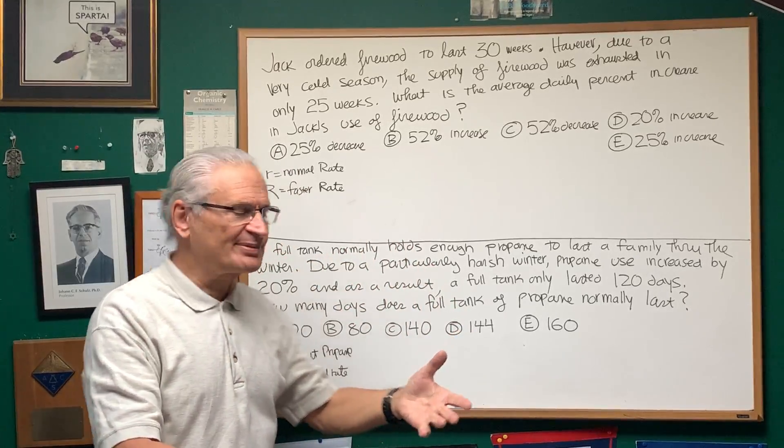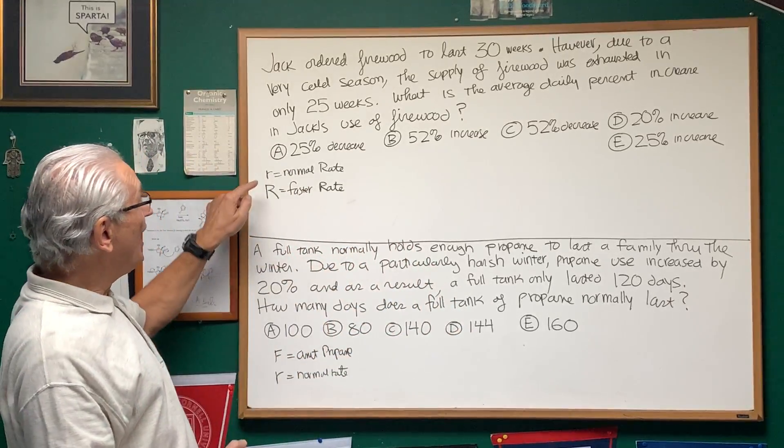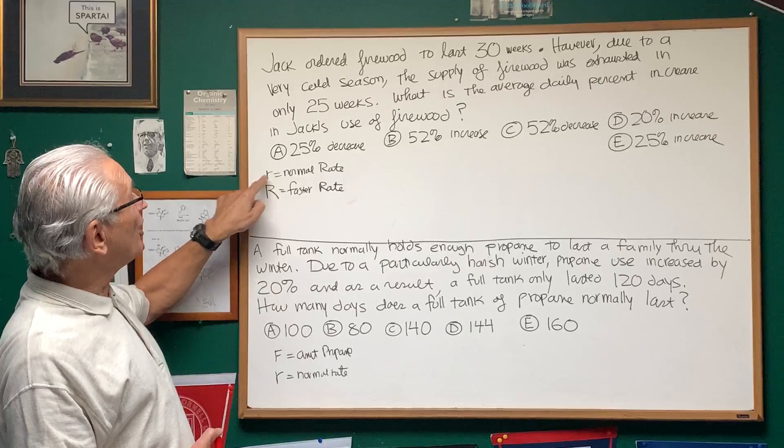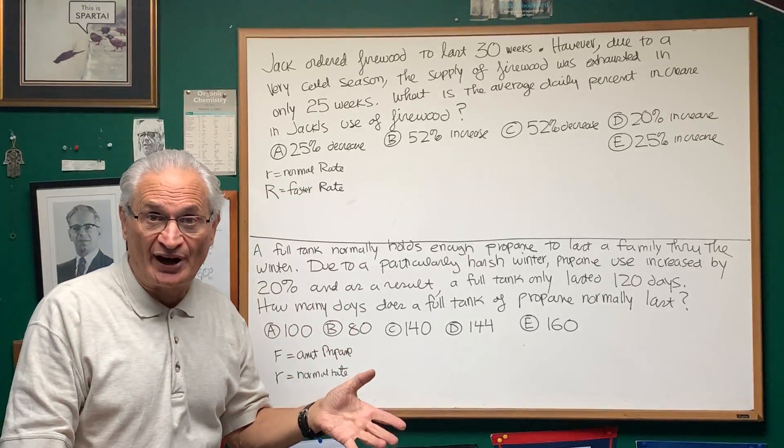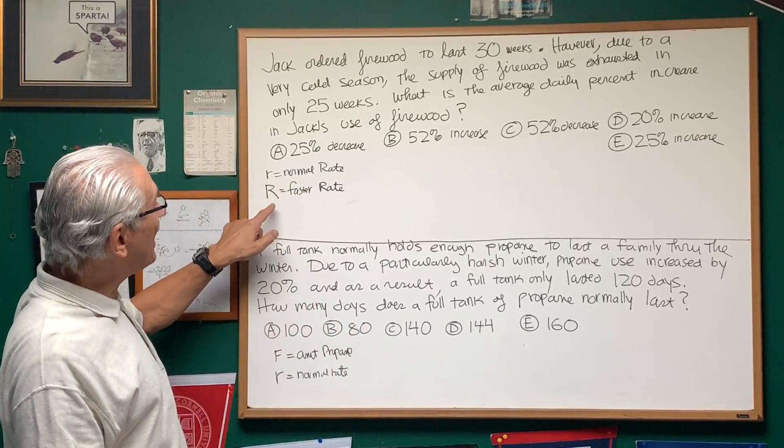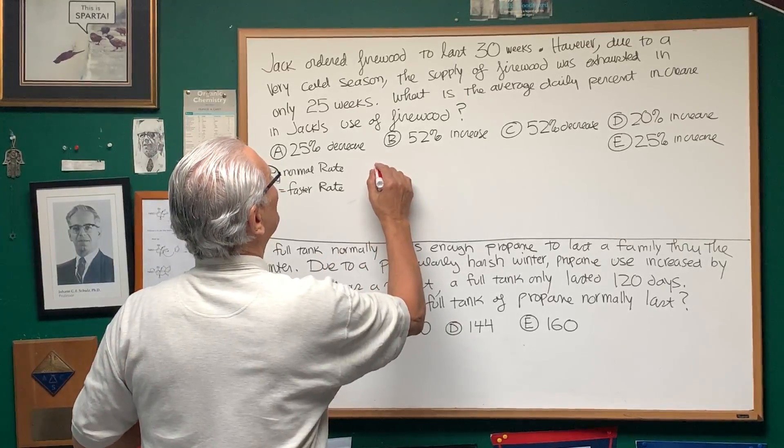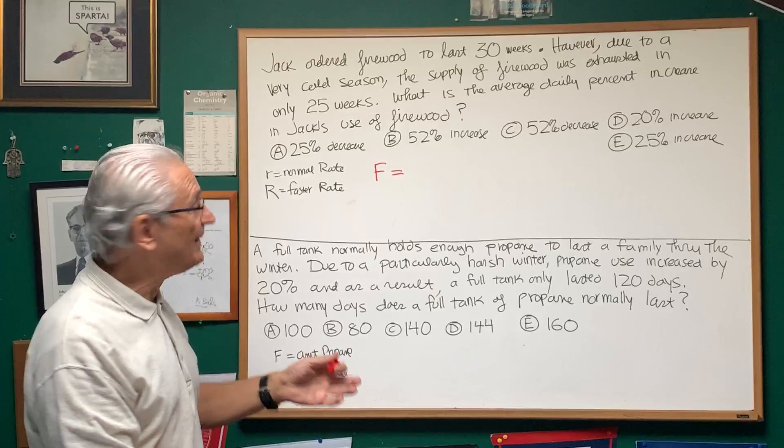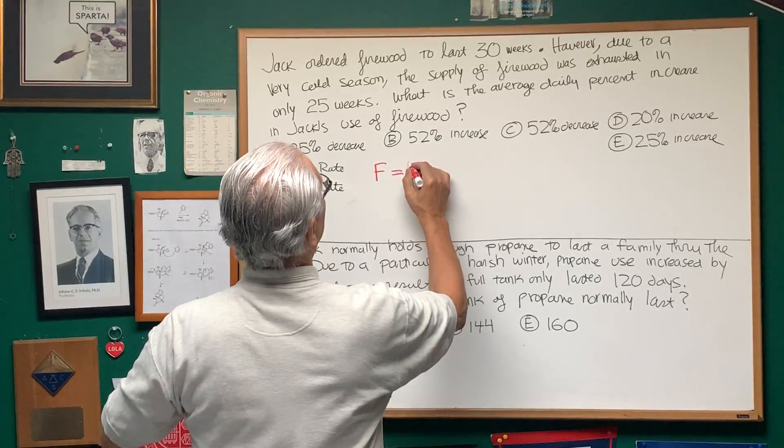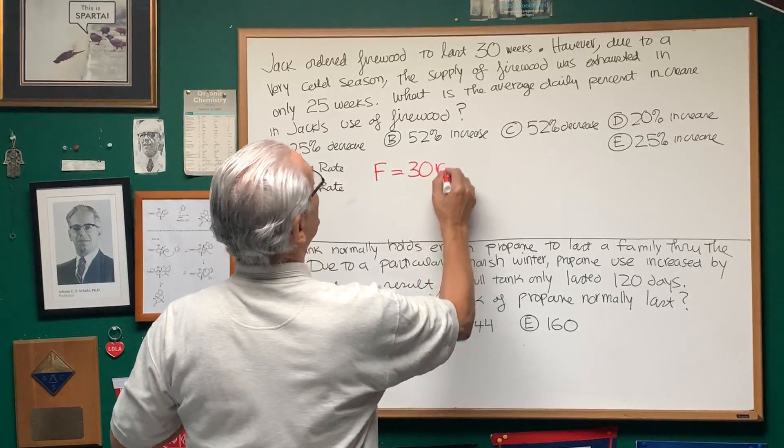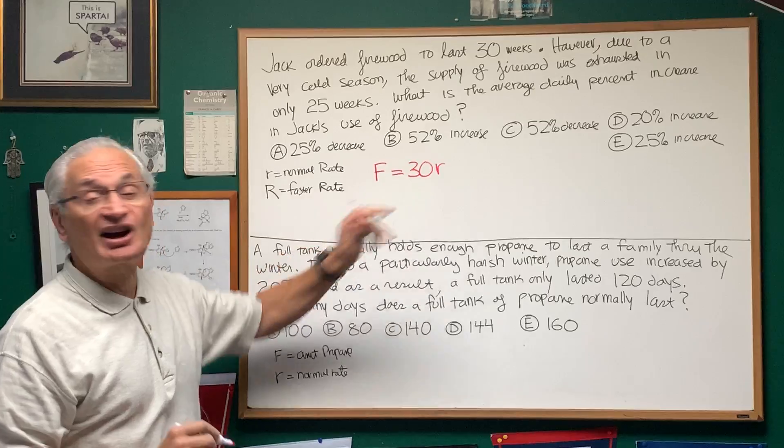Well, in order to organize this problem, let's assign a couple of variables. We'll take small case r and assign it to the normal rate of firewood consumption, and capital R for that faster rate. Now, the total amount of firewood is going to be represented by, if we take the normal rate and that lasts 30 weeks, it's 30 times r. That's how much firewood we have.